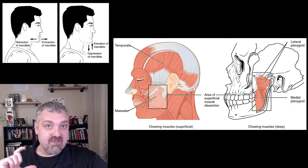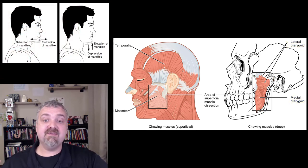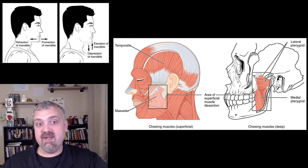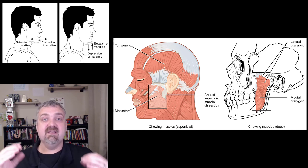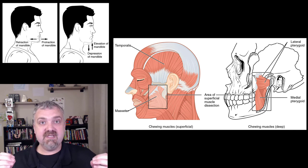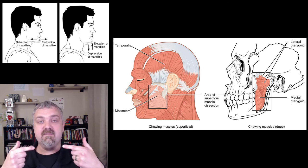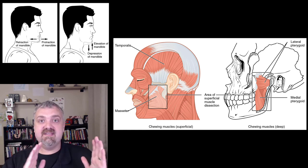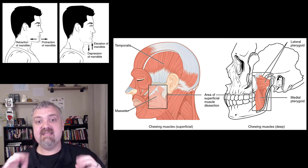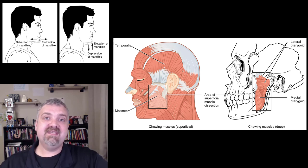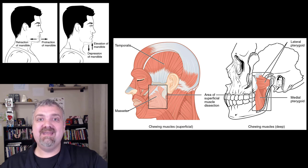So that is the temporalis and masseter — the two primary muscles of mastication. Then we have the buccinator and the pterygoids and the role they play in chewing. Elevation of the mandible is closing the mouth, depression of the mandible is opening it. Then we have protraction and retraction — moving forward and backwards — and some gliding side to side as well with chewing. I hope this helps. Have a wonderful day. Be blessed.